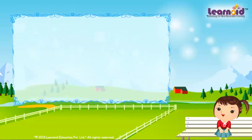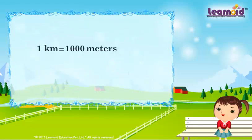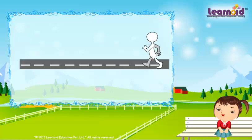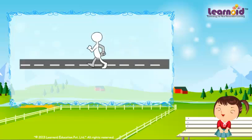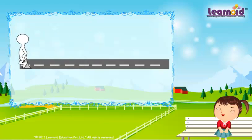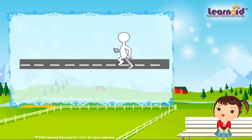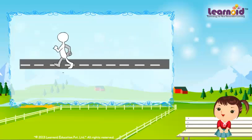One kilometer is 1000 meters. When you walk, one step is approximately 1 meter. So, when you walk around 1000 steps, you will travel 1 kilometer.